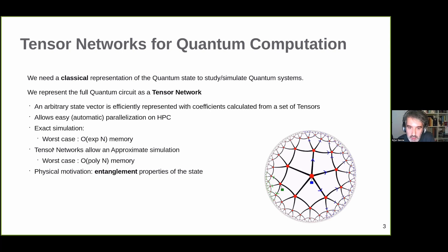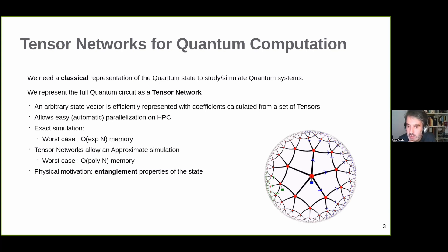These structures have the benefit, besides this flexibility, that they can be approximated. There is a lot of work done from the physically oriented community, because there are underlying physical principles that allow us to perform good approximations on these tensor networks, meaning that we can simulate, to a degree of approximation, very large quantum circuits.